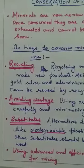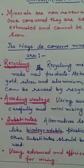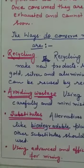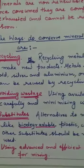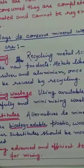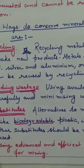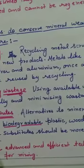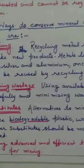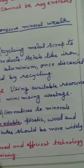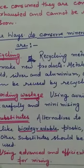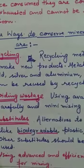The second way is avoiding wastage — using available resources carefully and minimizing wastage. The third point is substitutes: alternatives to minerals like biodegradable plastic and wood. These substitutes should be more widely used.